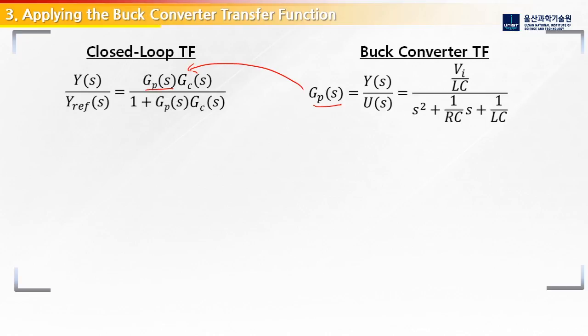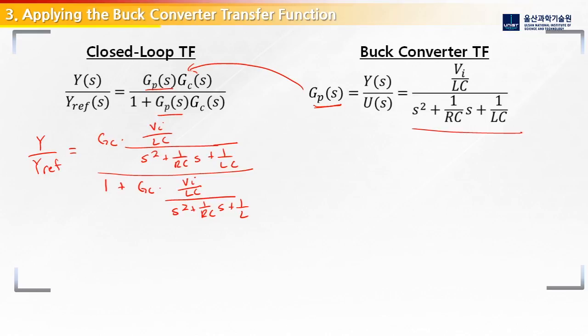So first, we'll substitute this value into Gp. Y over Yref. Let's just write it all out for clarity. We're going to start with Gc here and write this whole thing next to it. There's our numerator. Then we have to do the same thing at the bottom of the denominator. 1 plus Gc and multiply this whole function here. Now to simplify this, we want to get rid of this part in the denominator. So we multiply both the top and the bottom by this same value here. If we do that, we'll simplify our system a little bit.